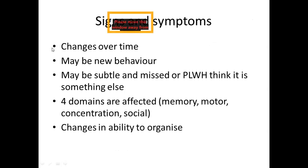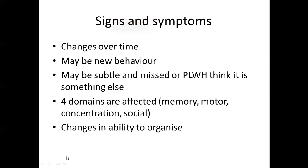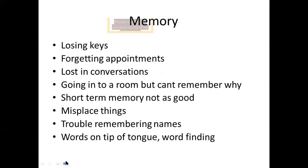Signs and symptoms: there are changes over time in cognition; new behaviors may arise and can be very subtle and missed. Four domains are mainly affected: memory, motor, concentration, and social. Memory symptoms include losing keys or objects, forgetting appointments, getting lost in conversations, going to a room but not remembering why, short-term memory not as good as before, trouble remembering names, and word-finding difficulties.